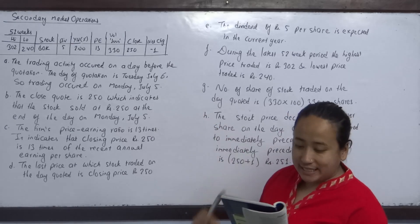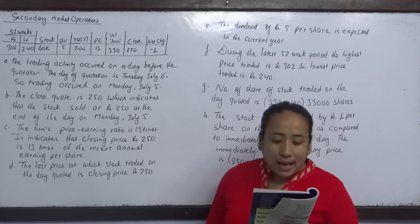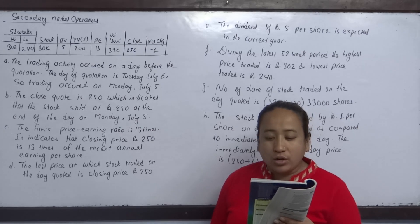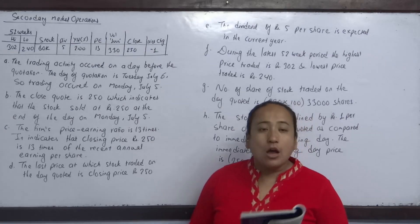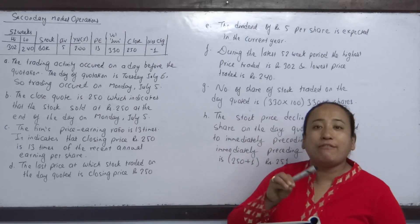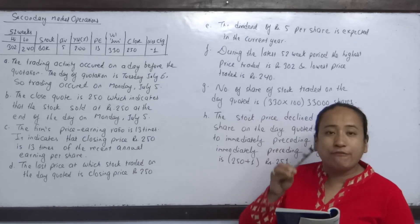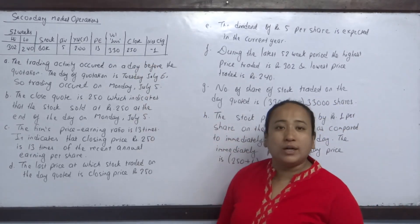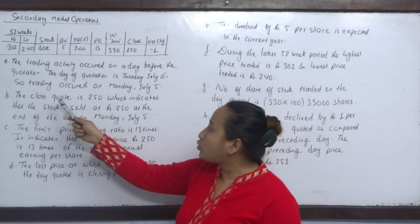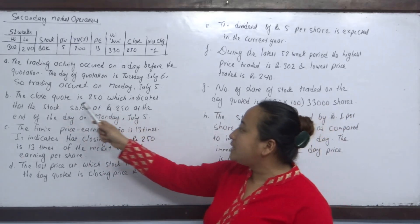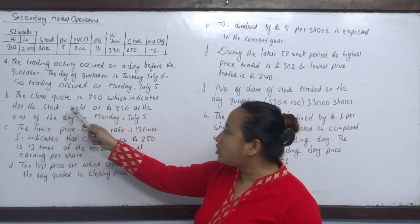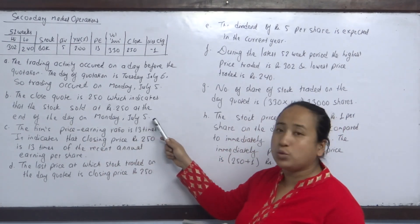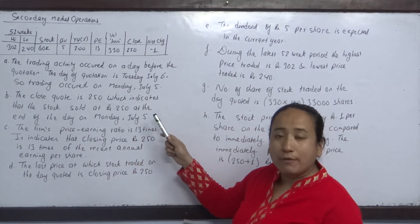At what price did the stock sell at the end of the day on Monday July 5? The quotation shows the closing price. The closing price indicates that stock sold at Rs. 250 at the end of the day on Monday July 5.